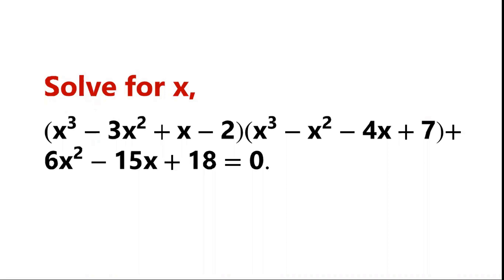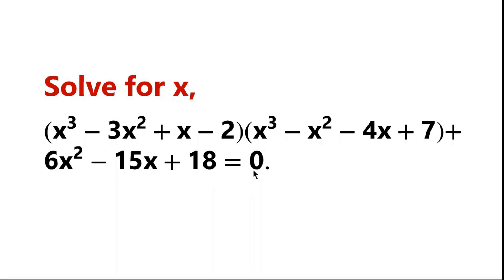Solve (x³ - 3x² + x - 2)(x³ - x² - 4x + 7) + 6x² - 15x + 18 = 0.